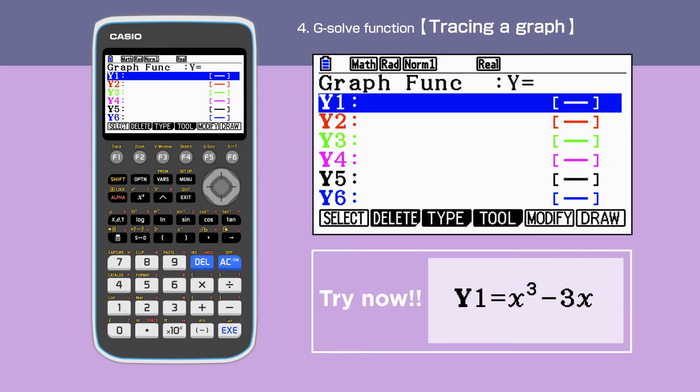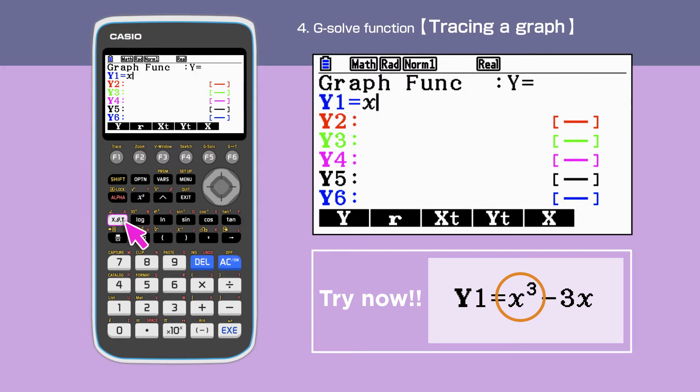Firstly, we are going to show how to trace a graph. Check that the graph function shows Y equals, then enter X cubed minus 3X in Y1. To get the power of 3, we will need to press the X theta T key, then hat key.